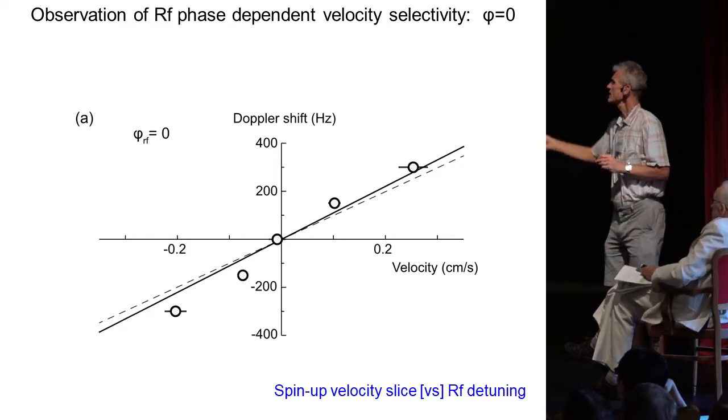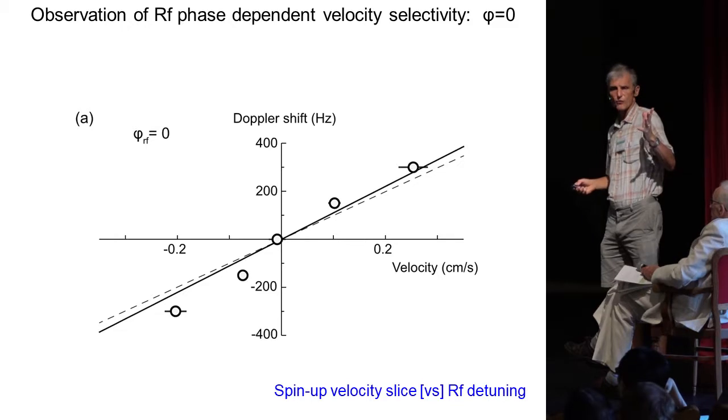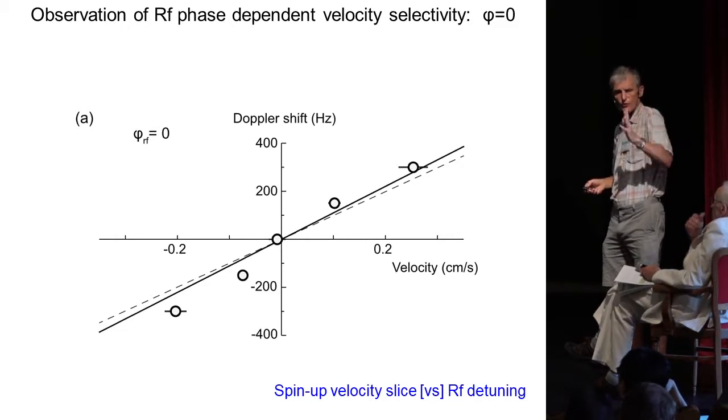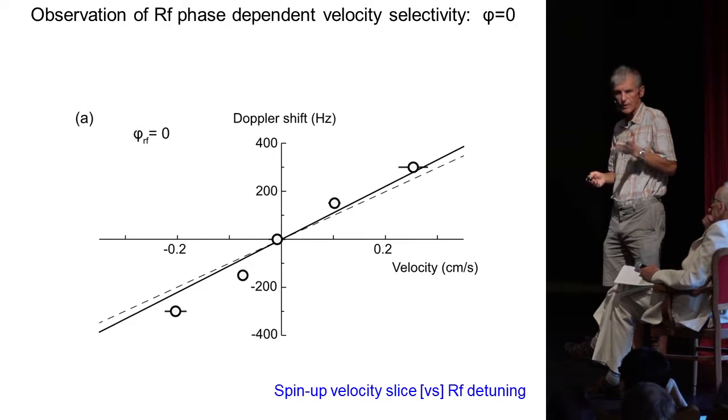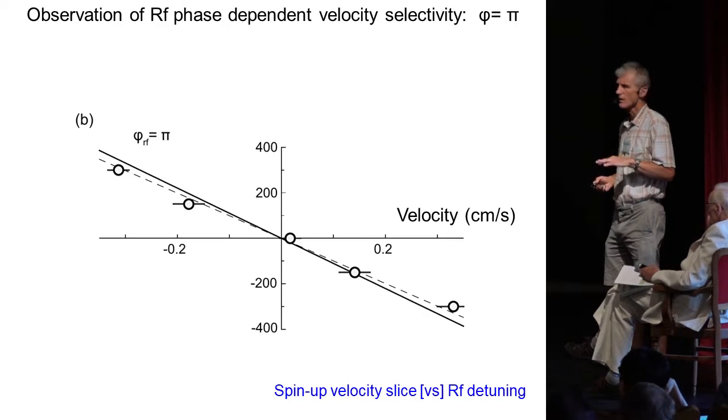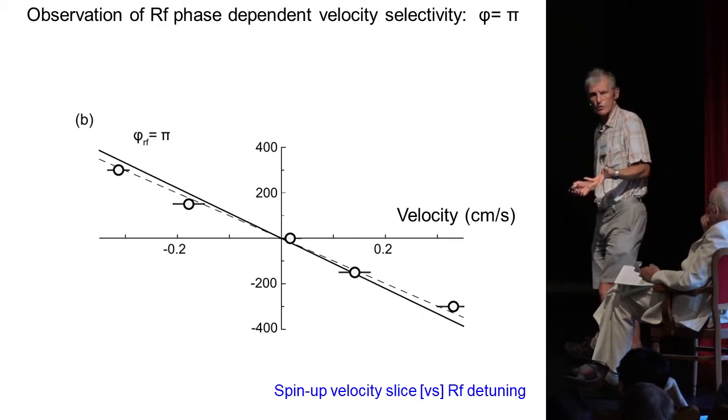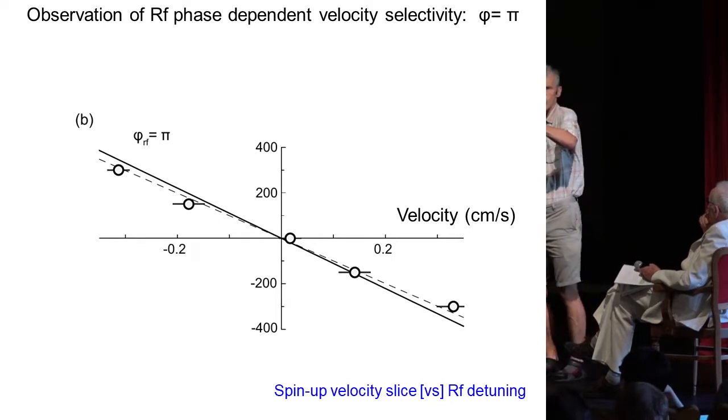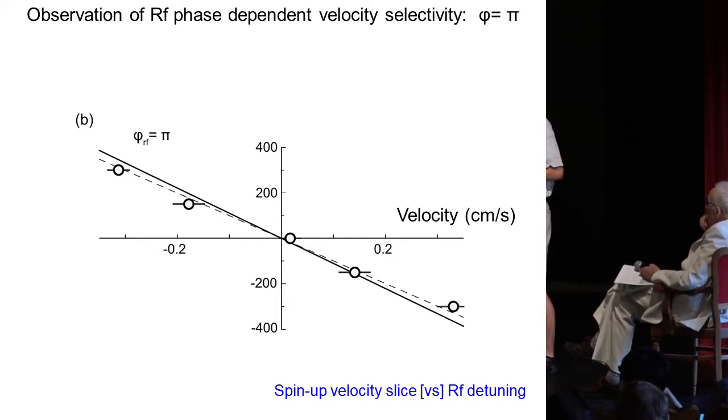Now, this is for one phase of the RF. If you now change the phase of the RF pulses by 180 degrees, the sign of the photon recoil flips, so the recoil momentum flips over, and we see the opposite Doppler shift.